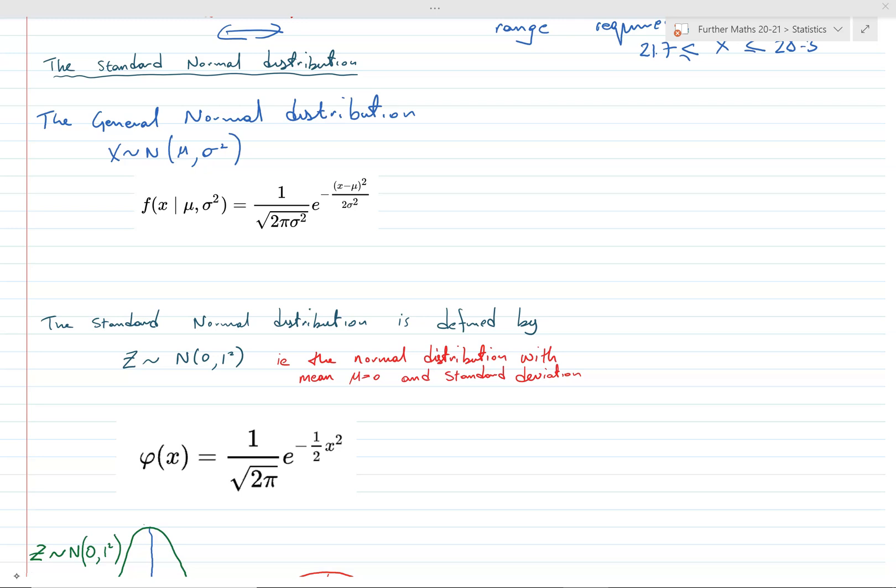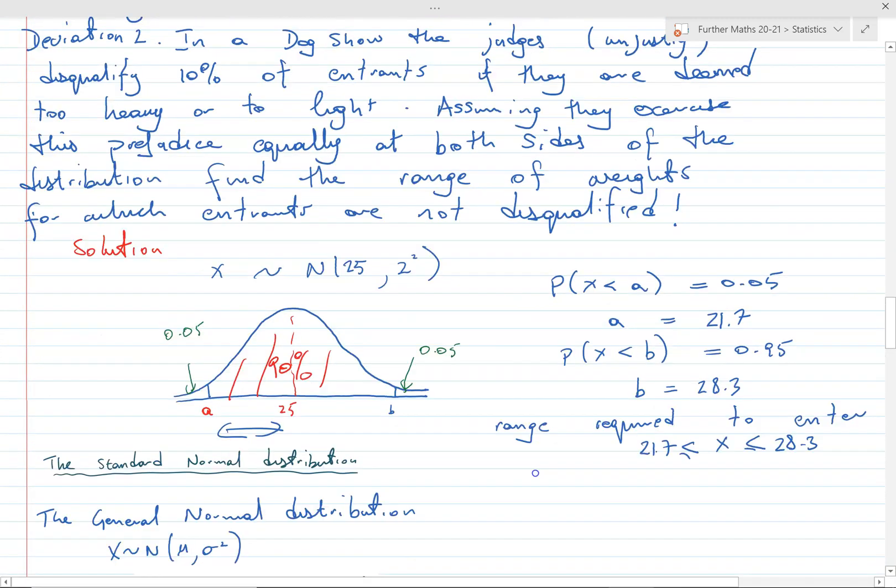Because just a few years ago in the old spec, the calculators did not give values for normal distribution and you had to use tables. You've got tables for this thing called the standard normal distribution, which has mean of zero and standard deviation of one. So we always had to refer back to that. If you look at older videos on this, you'll see the talk of the standard normal distribution coming up probably earlier than I've brought it up here.